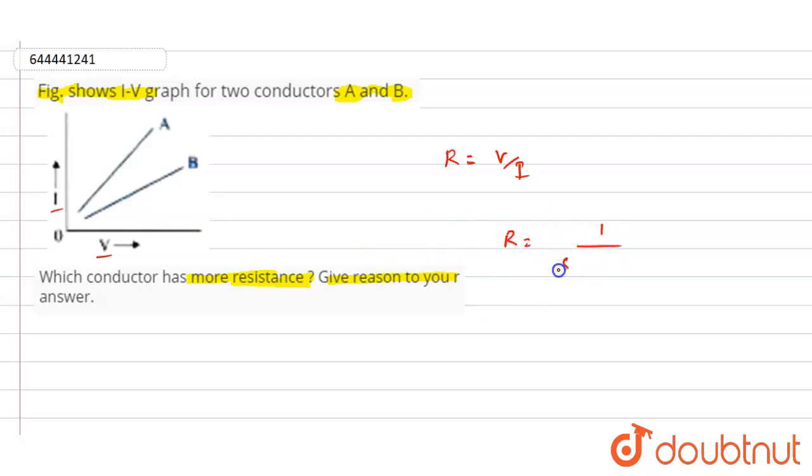According to that, since the straight line for conductor B is less steeper than that of conductor A, the resistance of conductor B is more than that of A.